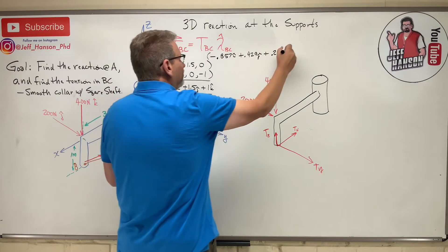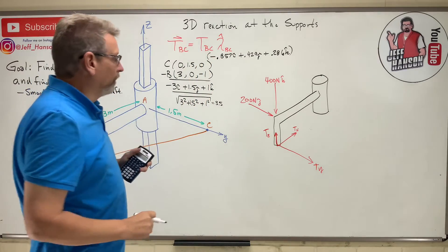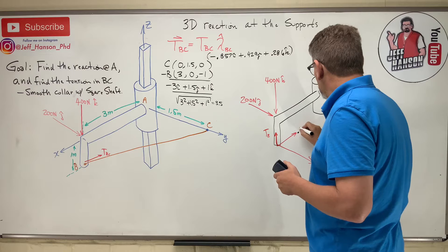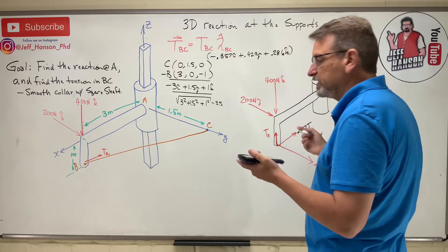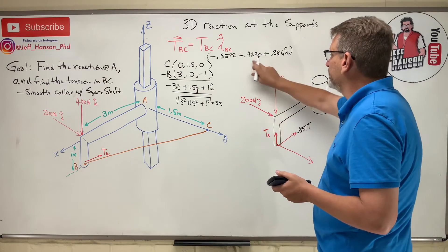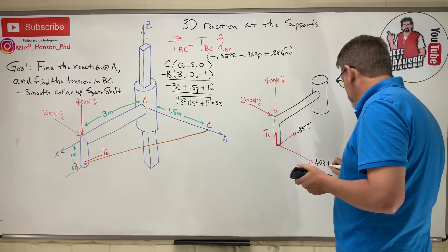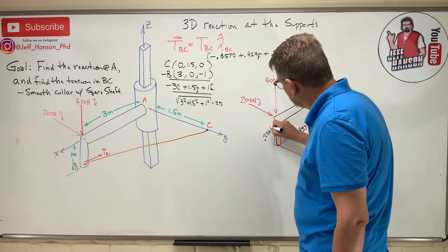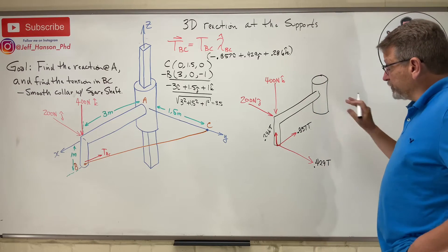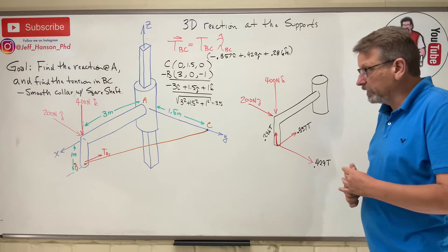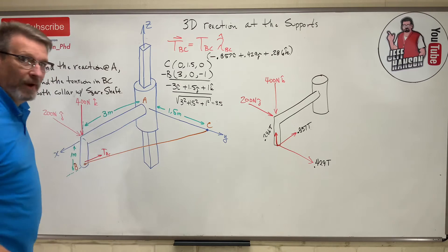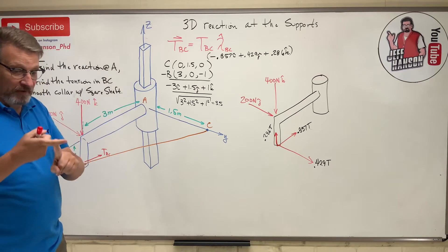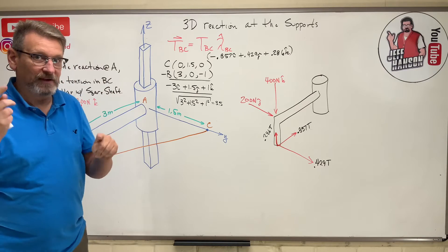That gives lambda-hat = −0.857 i-hat + 0.429 j-hat + 0.286 k-hat, multiplied by T_BC. So the tension components are: Tx = −0.857T, Ty = 0.429T, Tz = 0.286T. That completes the forces on the free body diagram. Now we need the reactions at point A. In 3D we ask: can I move it in x, y, z? Can I spin it around x, y, z?